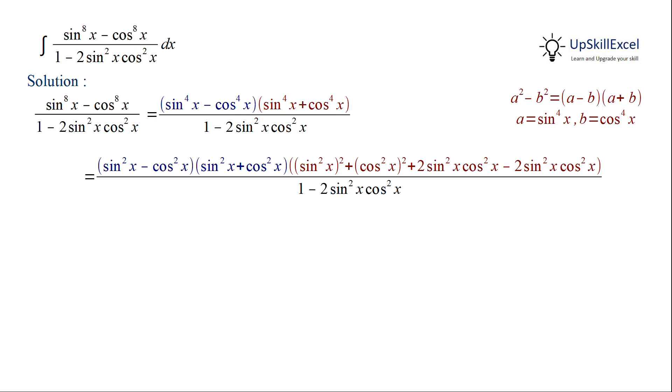The first term sin square x minus cos square x can be written as minus cos 2x. The second term sin square x plus cos square x becomes 1. Now in the third term, we can combine the first 3 terms to make it a perfect square of sin square x plus cos square x. And we will be left with the term minus 2 sin square x cos square x.